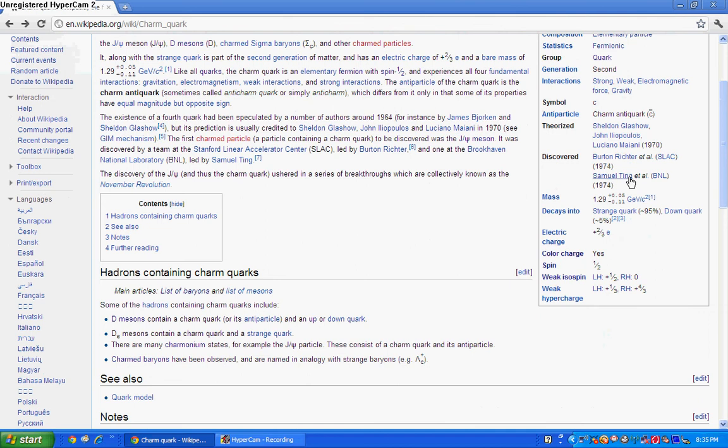The charm will 95% of the time decay into a strange quark, and 5% of the time into the down quark. The strange quark is the charm's partner in the second generation, so charm and strange make up the second generation of quarks.